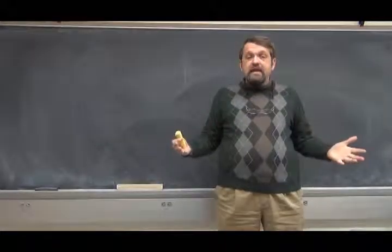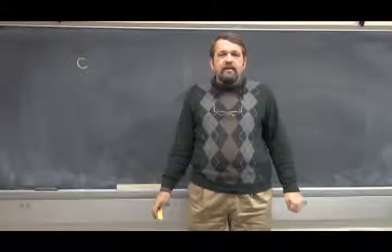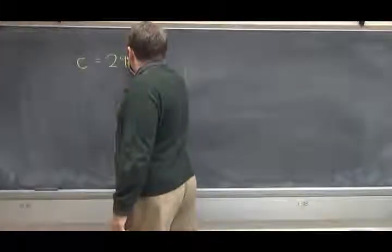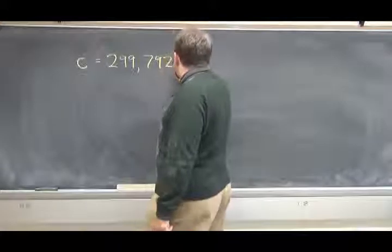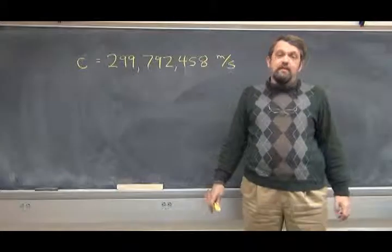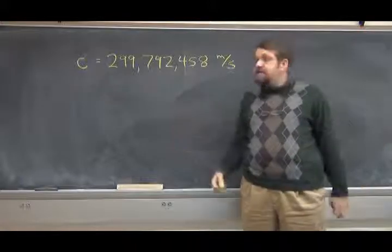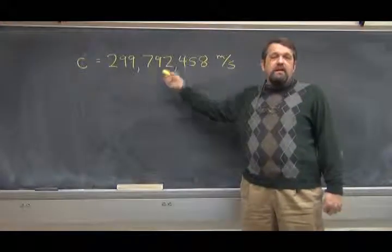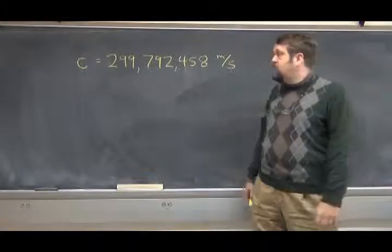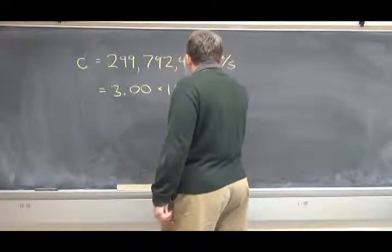So what is the speed of a light wave? Well, that speed is called C. C stands for the Latin word celeritas, which means speed. The speed of light is C, and it has a value of 299,792,458 meters per second. That number is exact because we define the length of the meter so that the speed of light has exactly this value in empty space. For our purposes, it's perfectly good to take the speed of light to be 3.00 times 10 to the 8 meters per second.